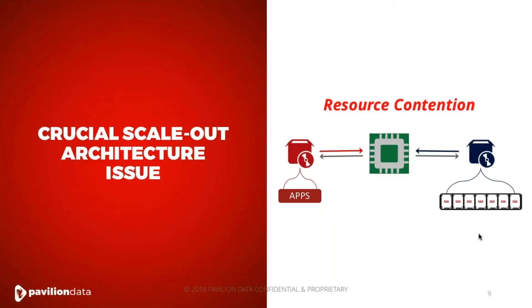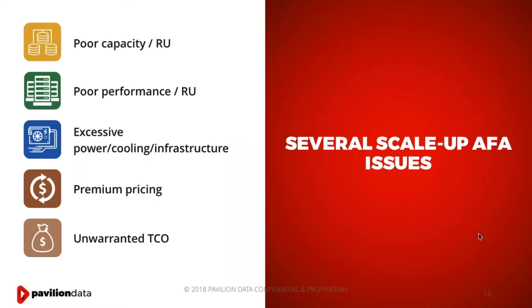The key issue here is architectural. In scale-out, applications and storage software contend for the same CPU and memory resources, which slows one another down — and storage software is very resource intensive. With the all-flash array scale-up model, you don't have enough controllers; the controllers become the bottleneck. So you end up with poor capacity per rack unit, poor performance per rack unit, excessive power and cooling, premium pricing, unwarranted TCO — all of which causes big iron. You see these large refrigerator racks of storage just to try to get the performance.